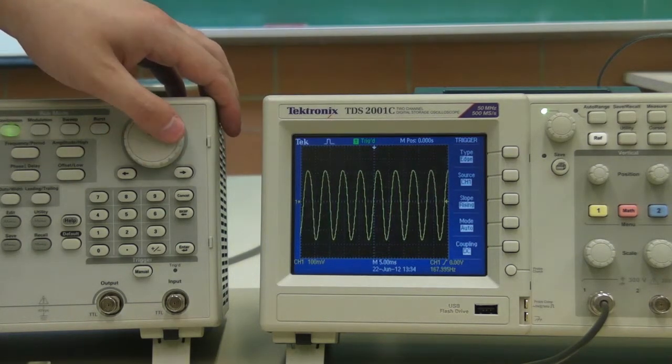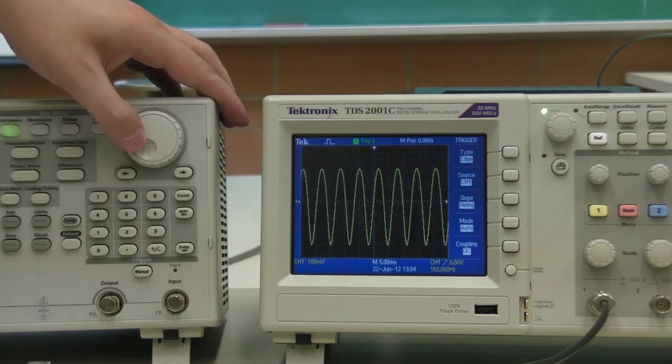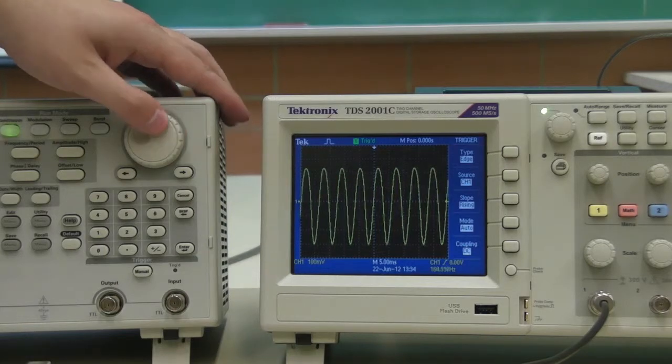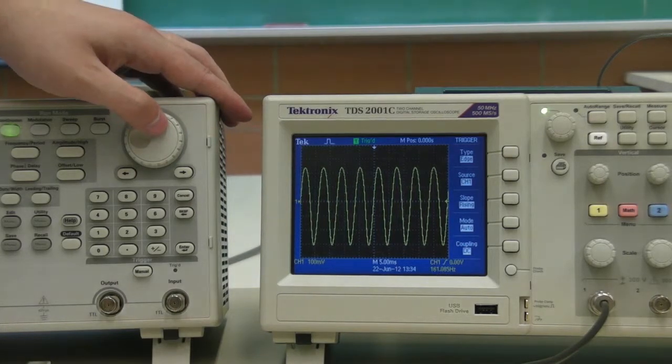As you increase the frequency, at some point, you'll see the output signal amplitude drop. That indicates that you found a local maxima. Record the frequency at this value, and then continue on to the next one.